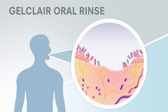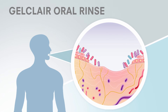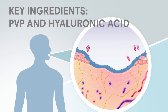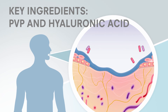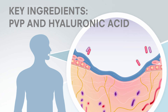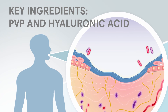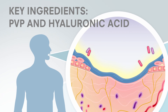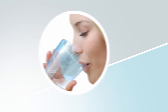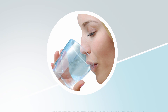GelClair is a unique bio-adherent oral rinse gel containing polyvinyl pyrolydone, or PVP, a hydrophilic polymer with muco-adherent and film-forming properties, which enhances tissue hydration. PVP helps relieve pain by creating a protective barrier over exposed nerve endings in the mouth, making them less sensitive. The other main ingredient in GelClair is hyaluronic acid, which coats the oral mucosa and enhances tissue hydration via its action as a molecular sponge.